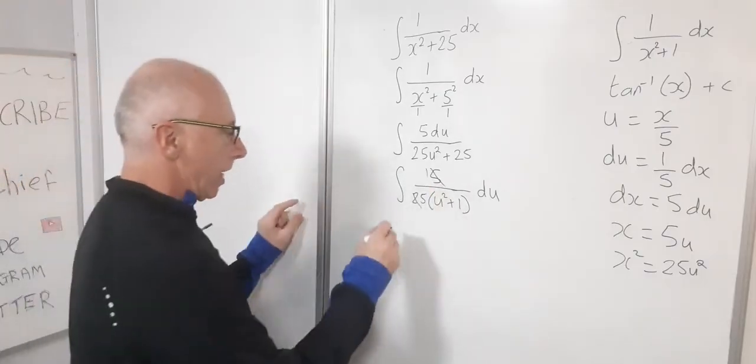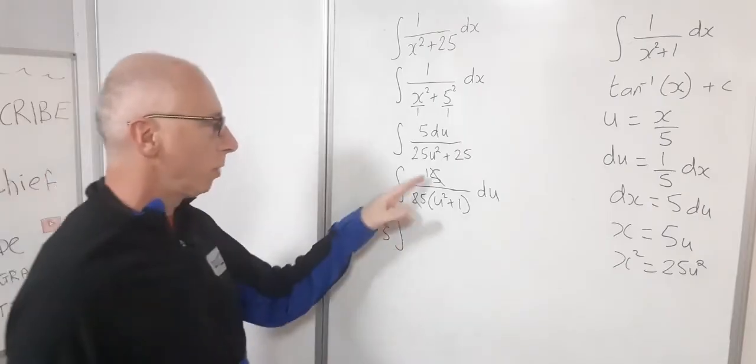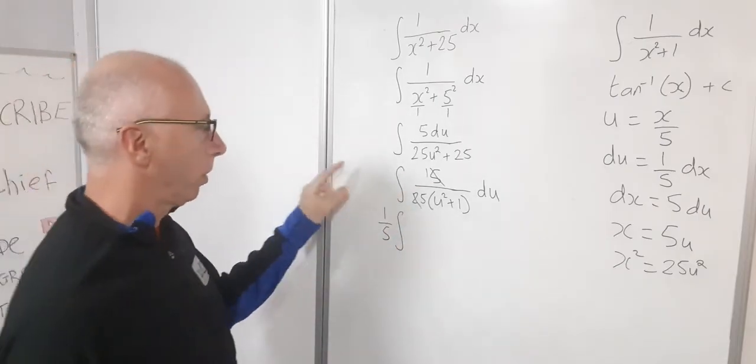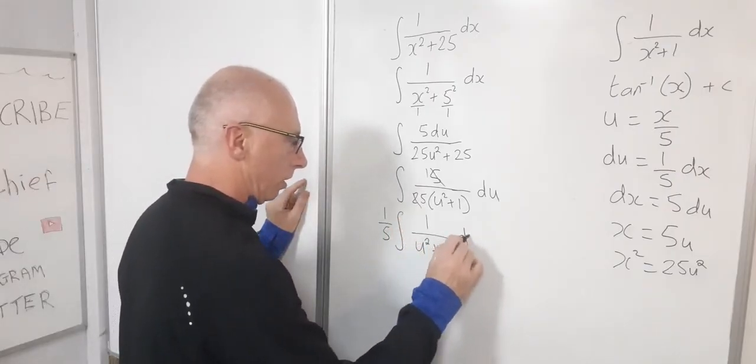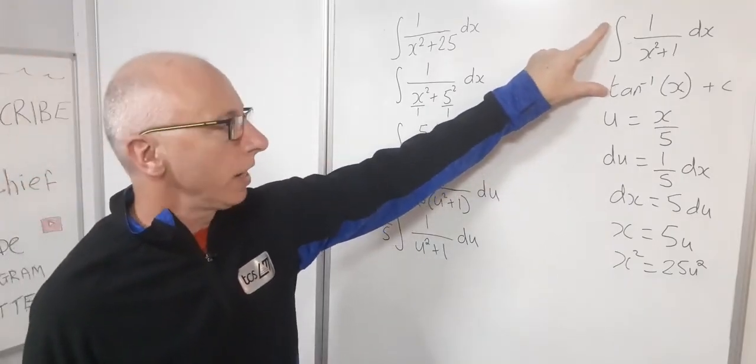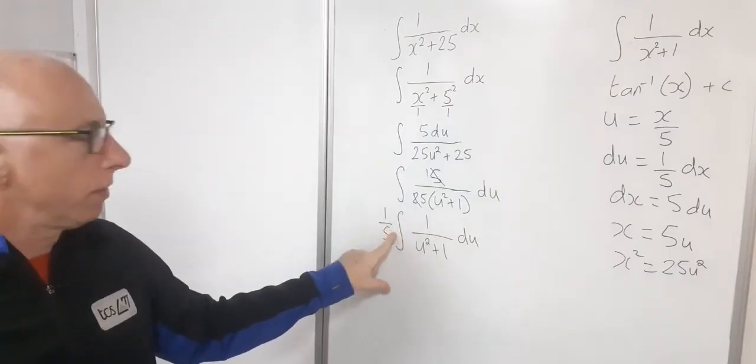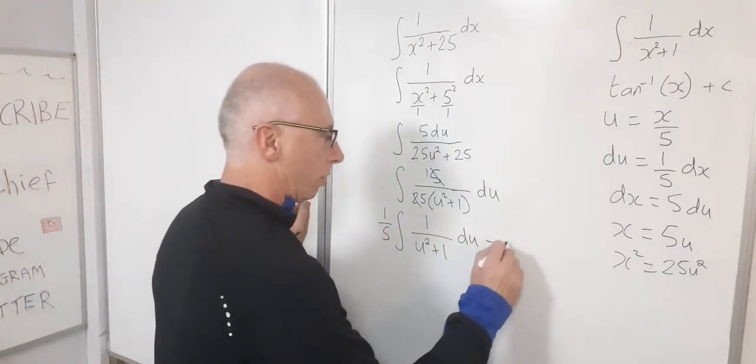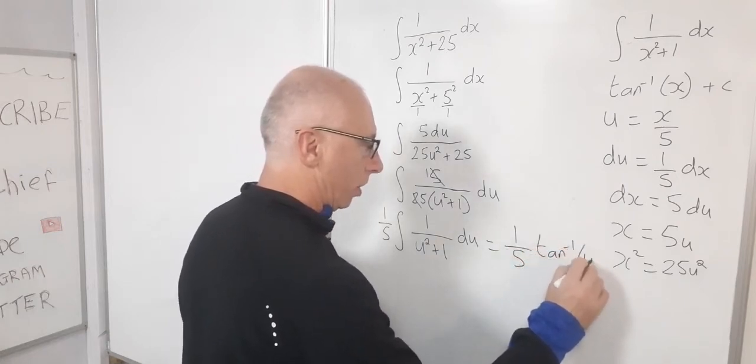So let's rewrite this up here now. Let's get this integral ready to integrate. 1 fifth we can bring out front. That's just a constant multiple. And then we've got 1 over u squared plus 1 du. Now using this integral here we're now ready to integrate this with 1 fifth in front of it. So that equals 1 fifth inverse tangent of u.